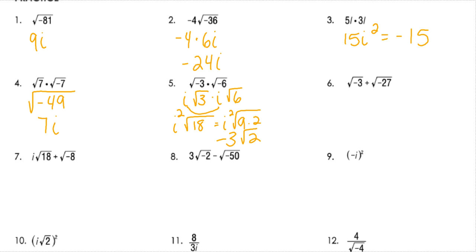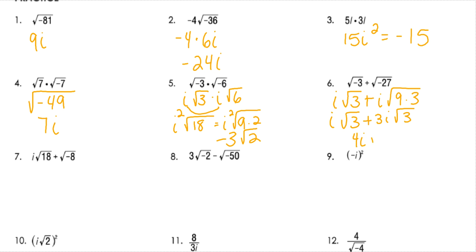Number 6 — now we're adding. In order to add, let's simplify a little bit. This would be i root 3, and then if I break the other apart, it's 9 times 3. So that would leave me with i root 3 plus 3i root 3. Now I have like terms that I can combine, giving me 4i root 3.